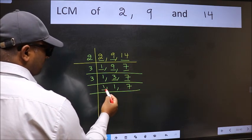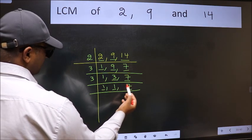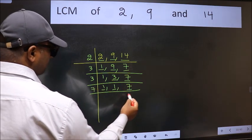Now we got 1 here and here. So focus on the next number 7. 7 is a prime number. So 7 into 1, 7.